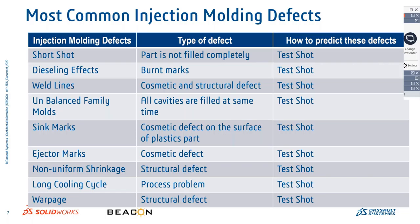As background, let's look at the most common injection molding defects. Injection molding happens once a tool is made with a core and cavity with all the injection systems in place. We come across a lot of defects in injection molding, and it takes time to rectify and avoid these defects. One is short shot, where a part is not filled completely.